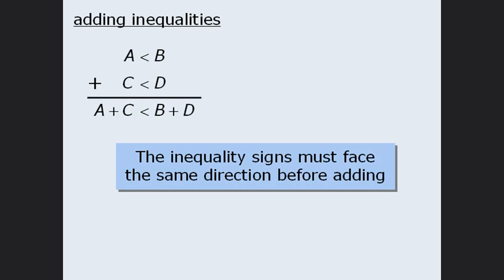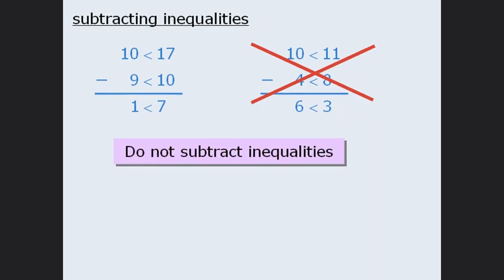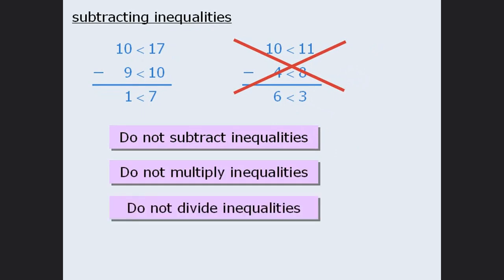Here's a quick example: since 6 is greater than 1 and negative 2 is greater than negative 5, we know that adding the two inequalities gives a resulting inequality that must be true. Be careful to avoid applying this technique to the subtraction of inequalities. In some cases subtracting inequalities holds true, but in others it does not — so there is no reliable rule for subtracting inequalities. Similarly, you should avoid multiplying or dividing inequalities. This technique works only for adding inequalities.